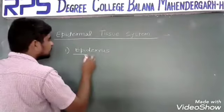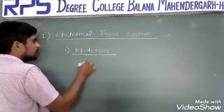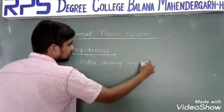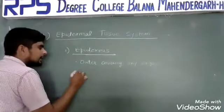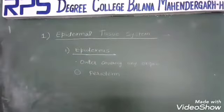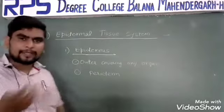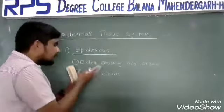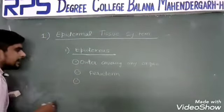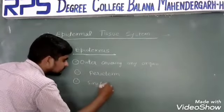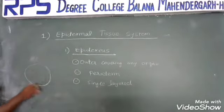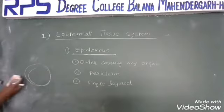Epidermis is the outermost covering of any organ. It could undergo secondary growth, in which case it would be called periderm — so periderm is also a component of the epidermal tissue system in secondary growth. Epidermis is generally single-layered, although there are exceptions: in the rubber plant and banyan plant, the epidermis is multilayered. Epidermis is called epiblema in roots — this is to be remembered. Generally it is parenchymatous, meaning it is made up of living cells.